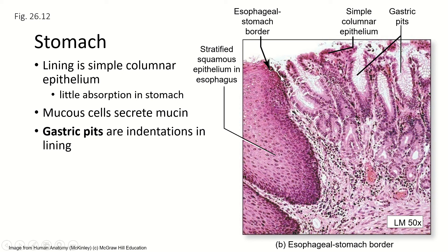There are also so many mucus cells — look at all these goblet cells. Tons and tons to make lots and lots of mucus. Because cells farther down are going to make acid, so this layer of mucus helps to protect the cells here from the acid.